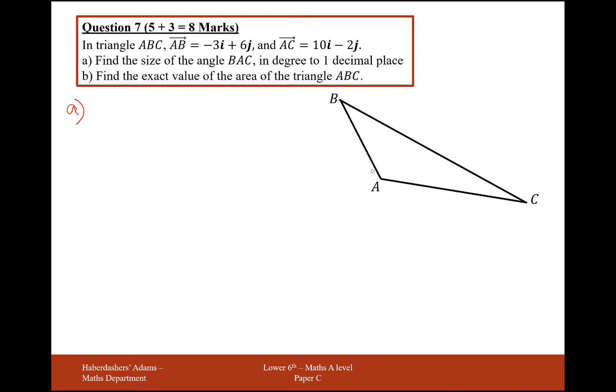In the triangle ABC, AB is representing minus 3i add 6j, and AC is representing 10i minus 2j.